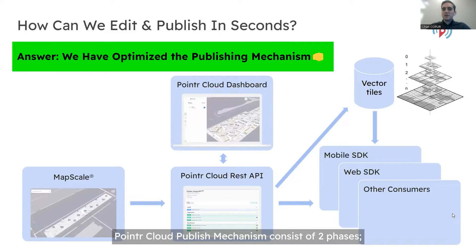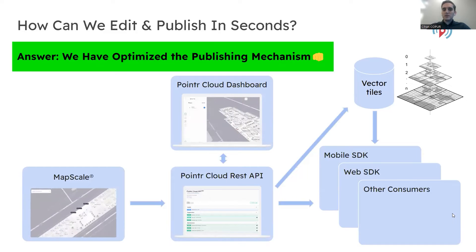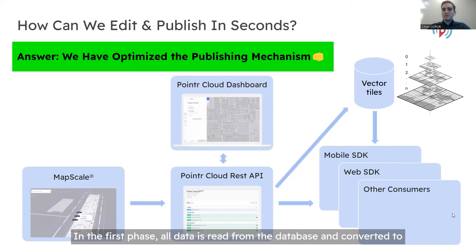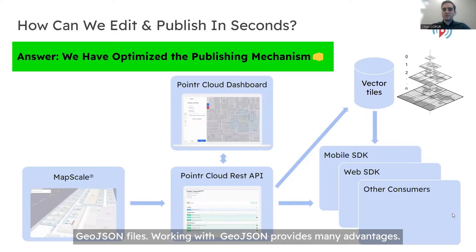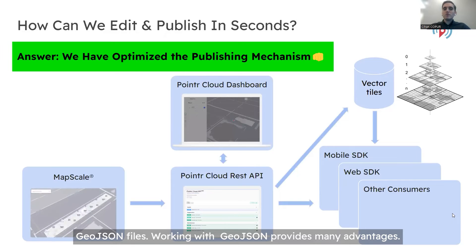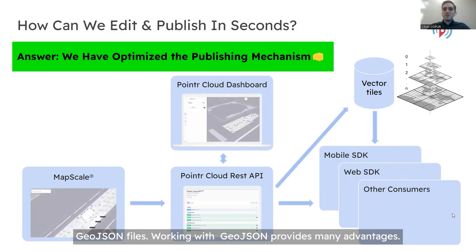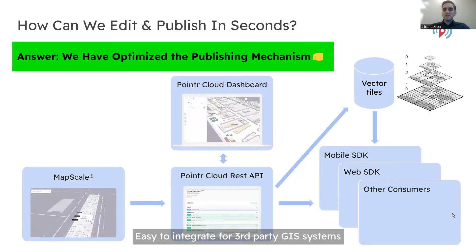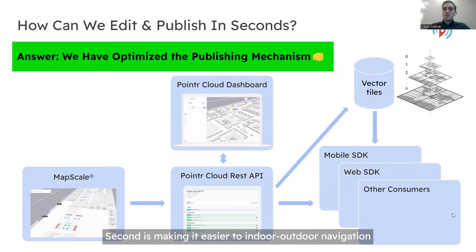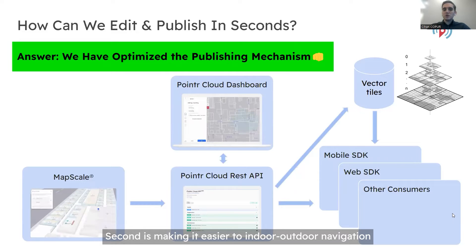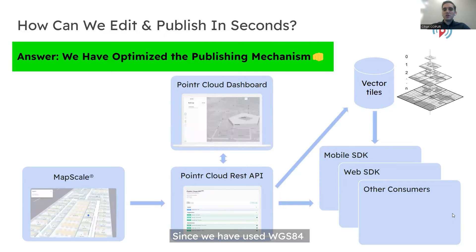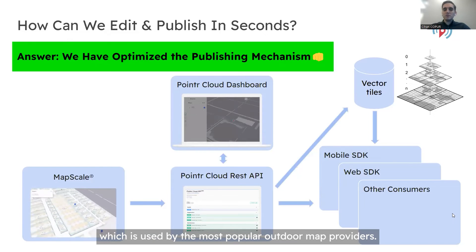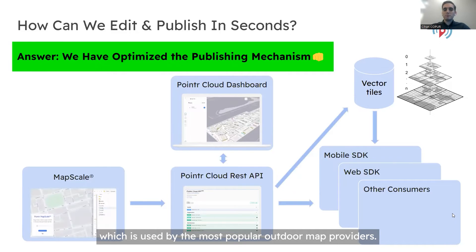The Pointer Cloud publish mechanism consists of two phases. In the first phase, all data is read from the database and converted to GeoJSON files. Working with GeoJSON provides many advantages — it is easy to integrate for third-party GIS systems, and it makes indoor-outdoor navigation easier since we use WGS84, which is used by the most popular outdoor map providers.